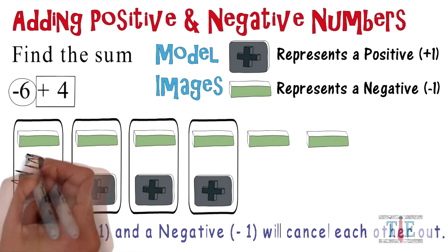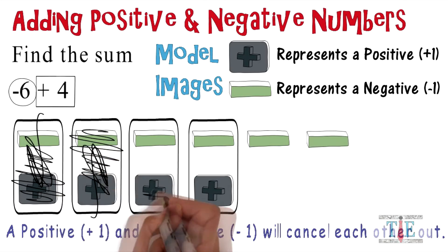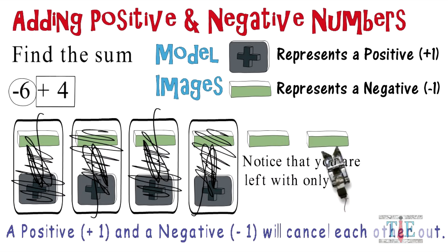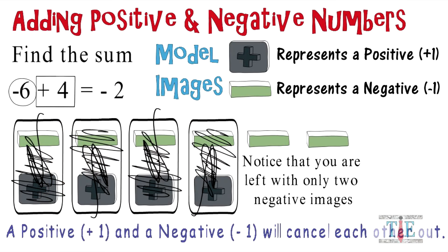So let's cancel out the first one, the second one, the third one, and the fourth one. What are we left with? Notice that you are left with only two negative model images. Therefore, -6 + 4 equals negative two. Good work, and keep crunching the numbers!